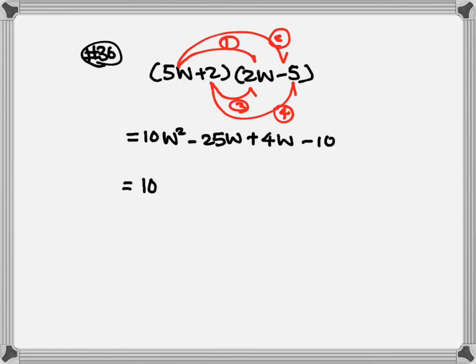Keep the 10w squared. Now combine the two middle terms: negative 25w plus 4w — negative 25 plus 4 becomes negative 21. Keep the w, and bring down the minus 10. So the answer is 10w squared minus 21w minus 10.